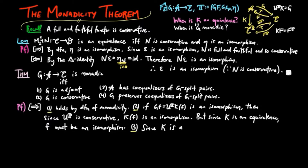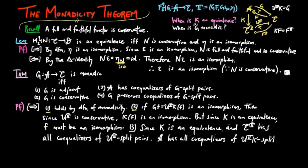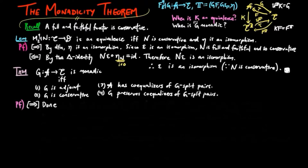For condition 3, since K is an equivalence and the Eilenberg-Moore category has coequalizers of UT-split pairs, the category A has coequalizers of UTK-split pairs. But UTK is just equal to G, and that completes condition 3. For condition 4, G preserves coequalizers of G-split pairs since UT does and G equals UTK, with K an equivalence. This completes the proof of the forward direction.